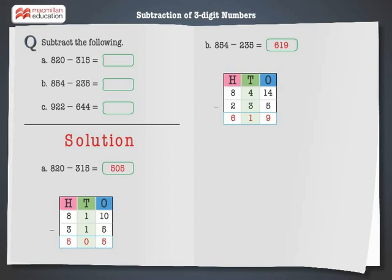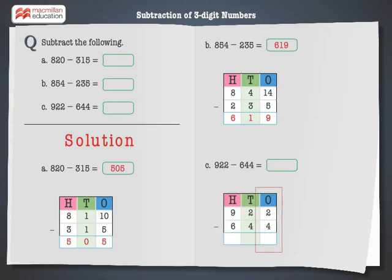Finally, let's solve the last problem: 922 minus 644. Arrange the digits in 100s, 10s, and 1s columns. Subtract the 1s first. 2 is smaller than 4, hence we cannot subtract 4 from 2. Therefore, regroup 922 as 9 hundreds, 1 ten, and 12 ones. Now subtract: 12 ones minus 4 ones is equal to 8 ones.